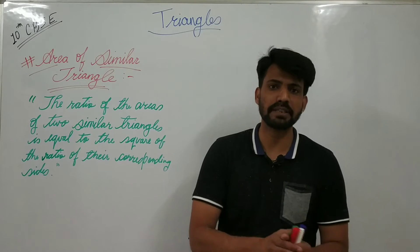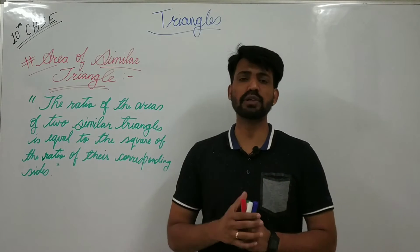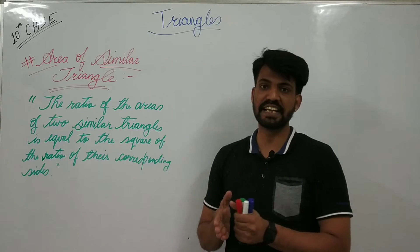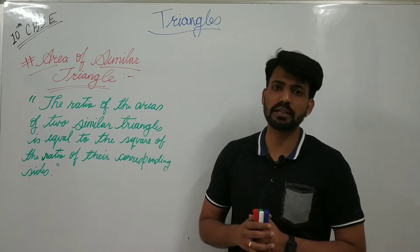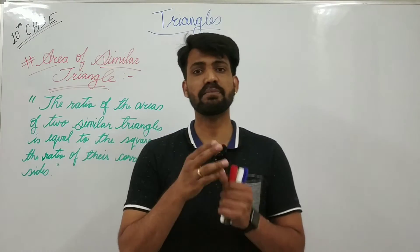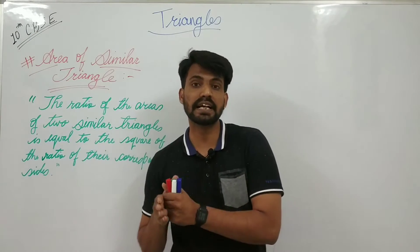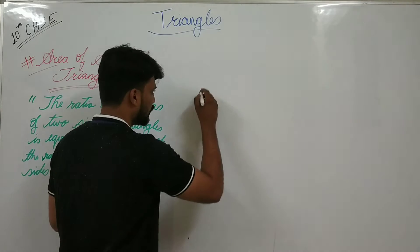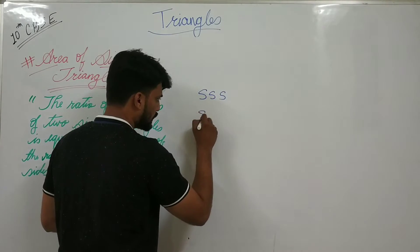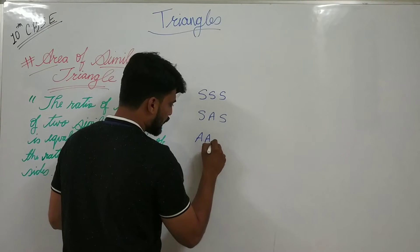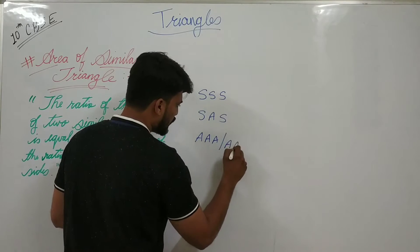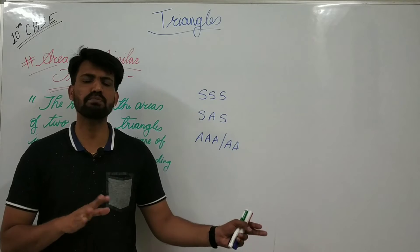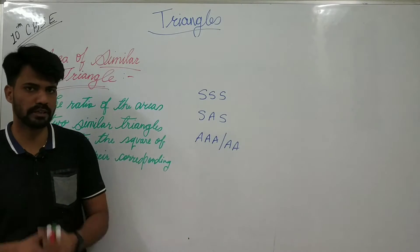Before proving the Area of Similar Triangle theorem, let me briefly cover the similarity criteria for triangles. If you have two triangles and want to show they are similar, there are three criteria or theorems you can use: the first is SSS, the second is SAS, and the third is AAA or AA. I will explain these briefly because they are used in the proof.